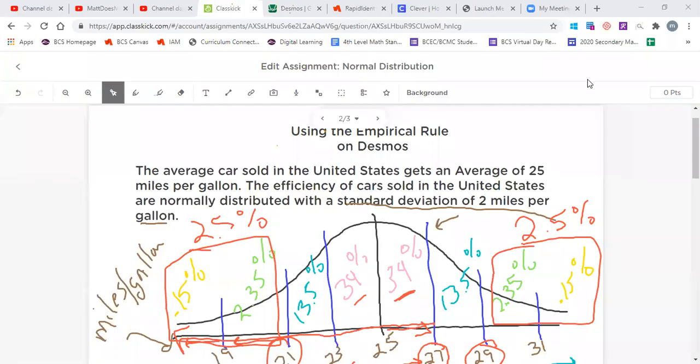All right guys, we're going to use the empirical rule, but this time we're going to throw it on Desmos and use previous problems so we can verify some of our work. We're going to start with the average car sold in the United States gets an average of 25 miles per gallon. The efficiency of the cars sold in the United States are normally distributed with a standard deviation of two miles per gallon. In the previous video we made the empirical rule by hand, and now let's bring this over to Desmos and toy around with the graph.